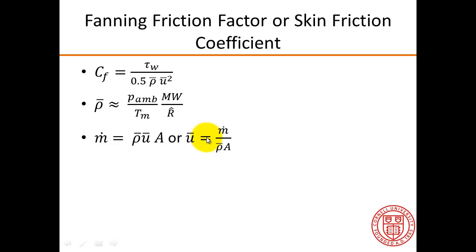Now the mass flow rate at any cross-section has to be constant by conservation of mass, and that's given by this expression here.